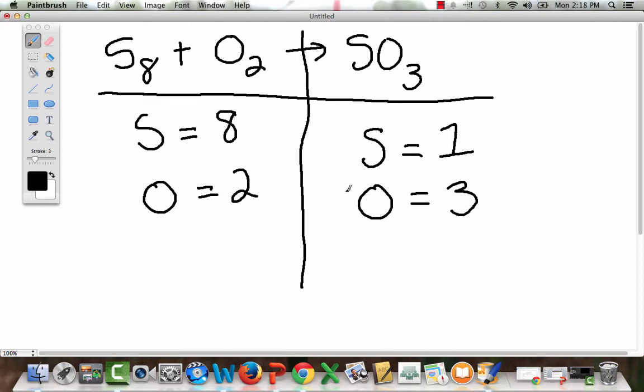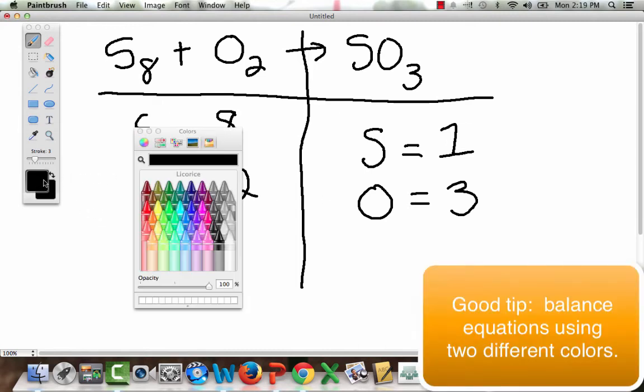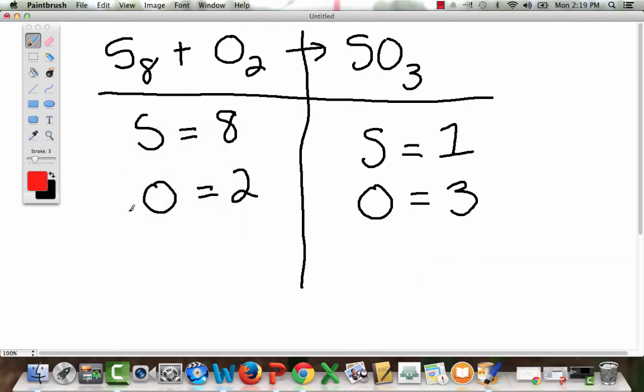So, looking at both sulfur and oxygen, we know that this is completely unbalanced and we need to deal with it. So, what is my only option that I can do? The only option that I can do is I can put a different coefficient in front of any of these compounds that I want. So, I'm going to start with sulfur.